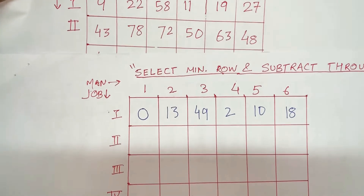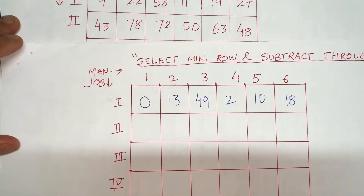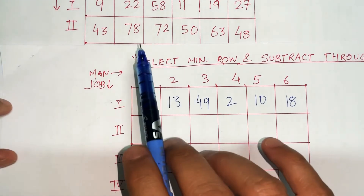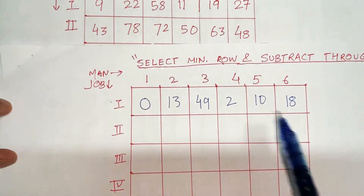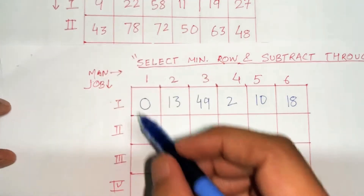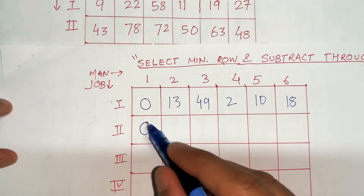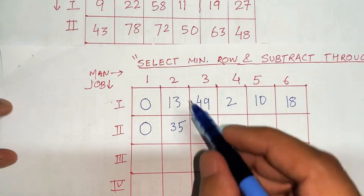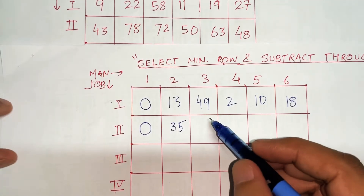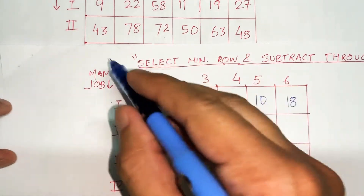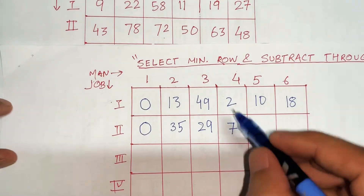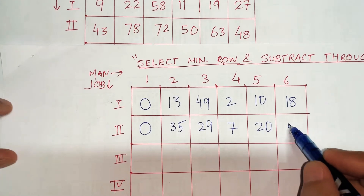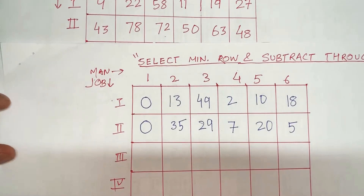Let's go with the second row. The minimum in this row is 43, so we are going to subtract 43 throughout: 43-43=0, 78-43=35, 72-43=29, 50-43=7, 63-43=20, and 48-43=5. So I obtained the second row.